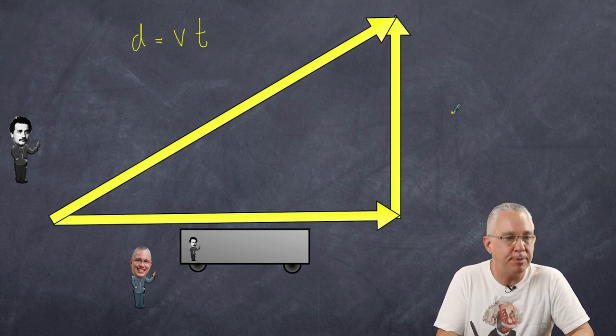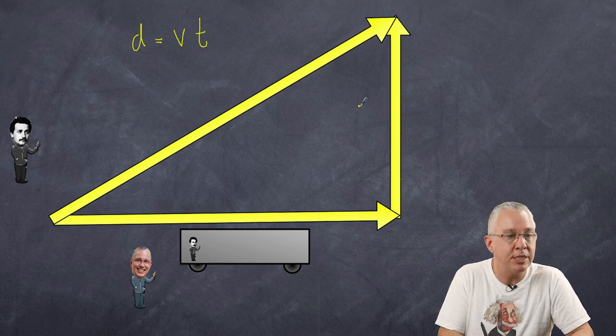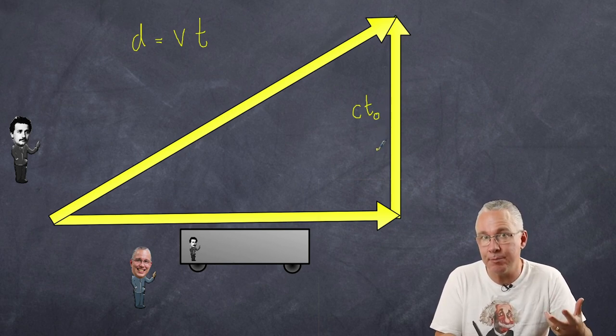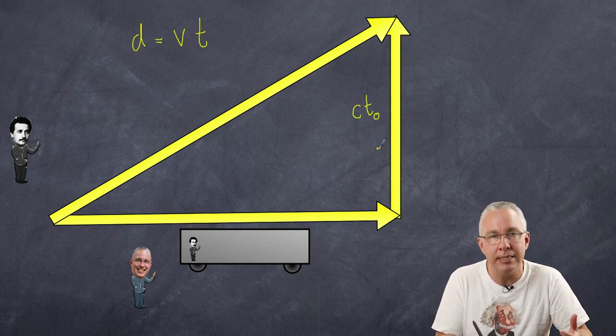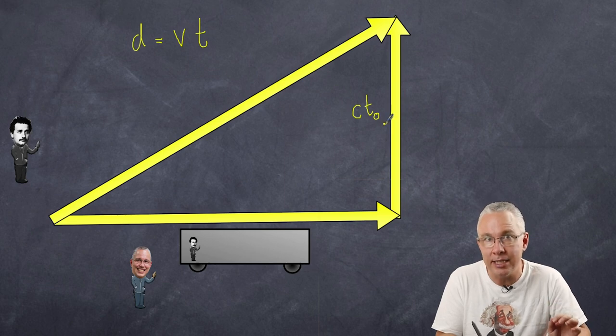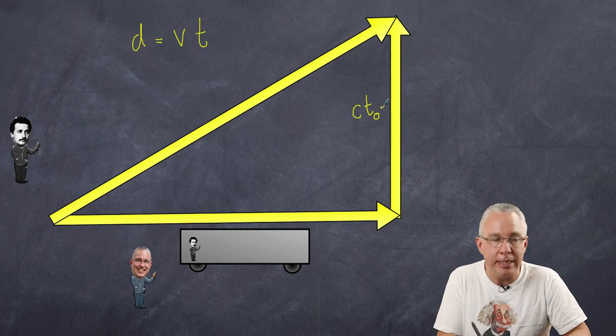The first thing we're going to do is Einstein's perspective. Now this distance here is equal to the velocity which is c which is the speed of light multiplied by t and we're going to make this called t0. This is called the proper time. There's nothing special about proper time it just means it's the time measured in the same frame of reference as the event. So in this case this is Einstein who's measuring the light in his frame of reference and so therefore t0 is the appropriate label we give to it.